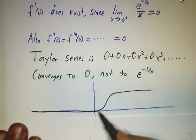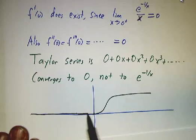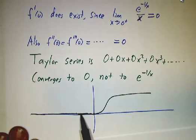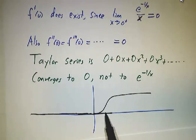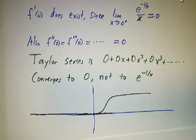So if I do the Taylor series, then over here, if I plug in a value of x over here, I get the correct function value, namely 0. But if I plug in a value of x over here, I get the wrong function value. I get 0 when I'm supposed to be getting e to the minus 1 over x.